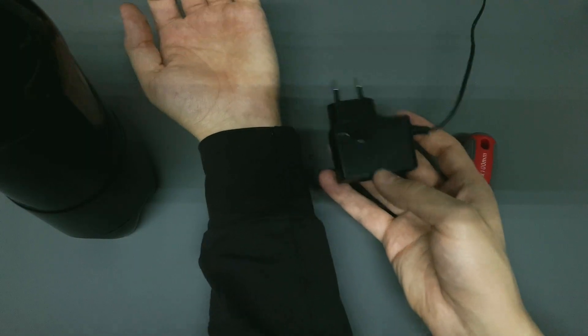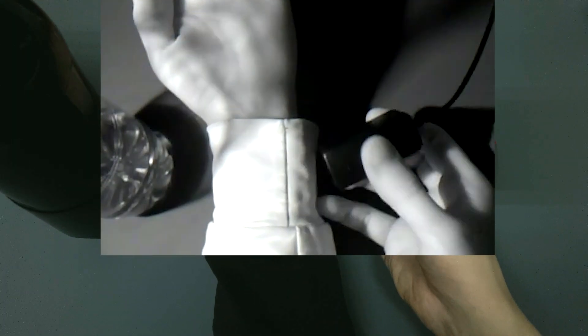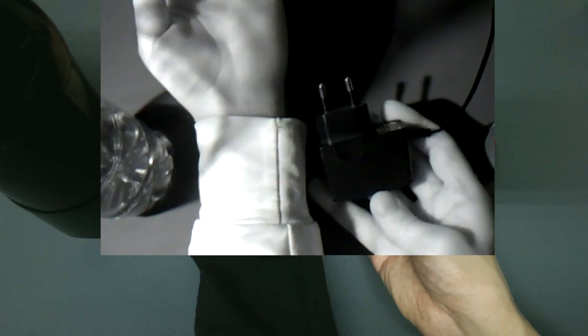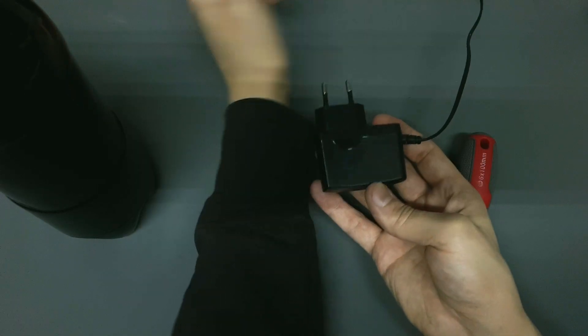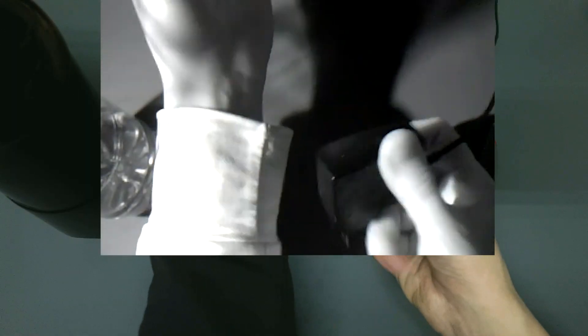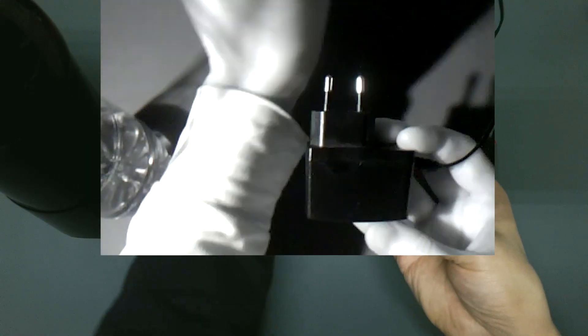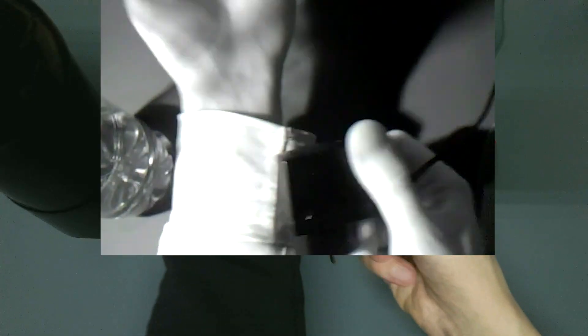But not everything that appears black in visible light turns white in the infrared. Take this black cloth and this black plastic, for example. Under infrared light, the cloth reflects and appears white, while the plastic absorbs and remains black.